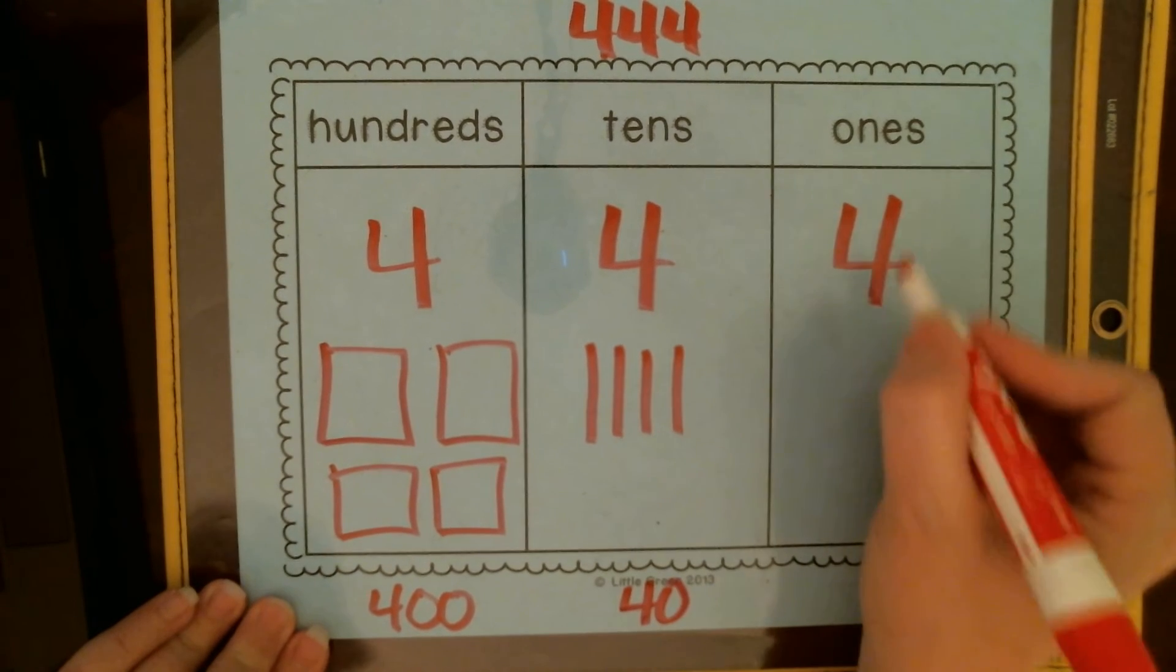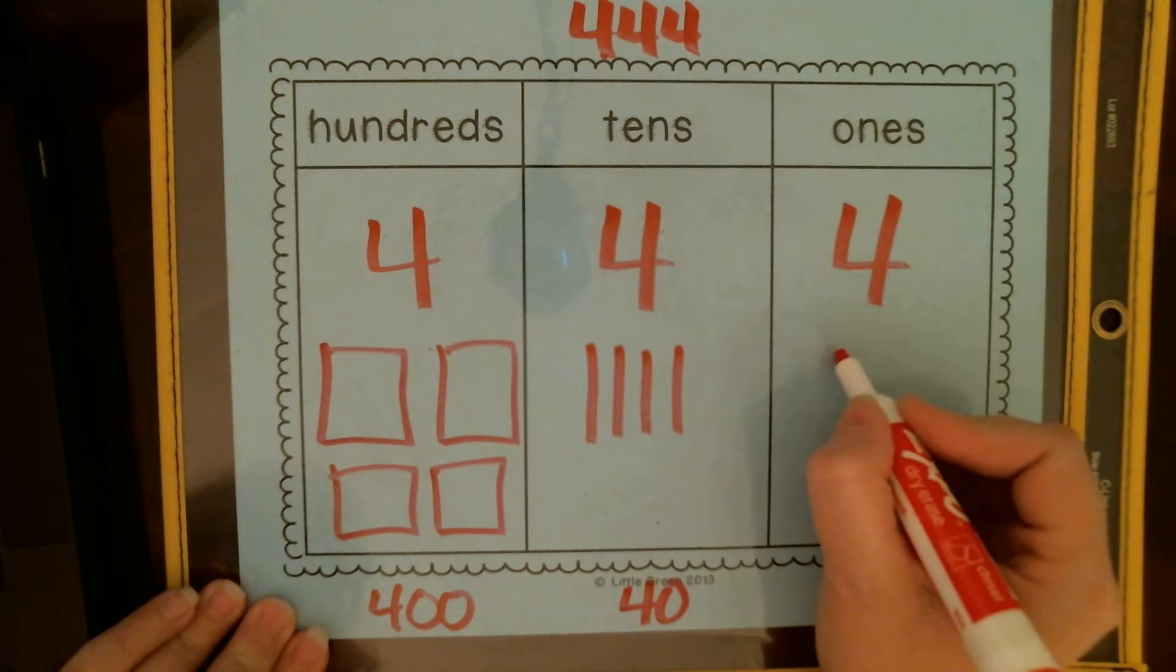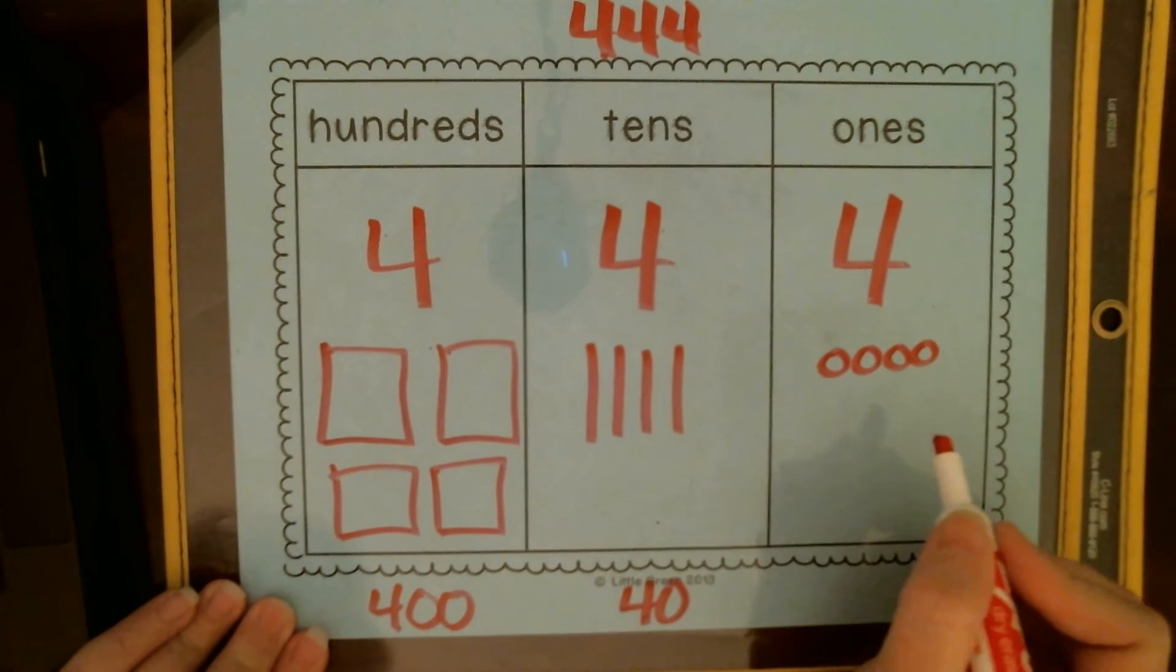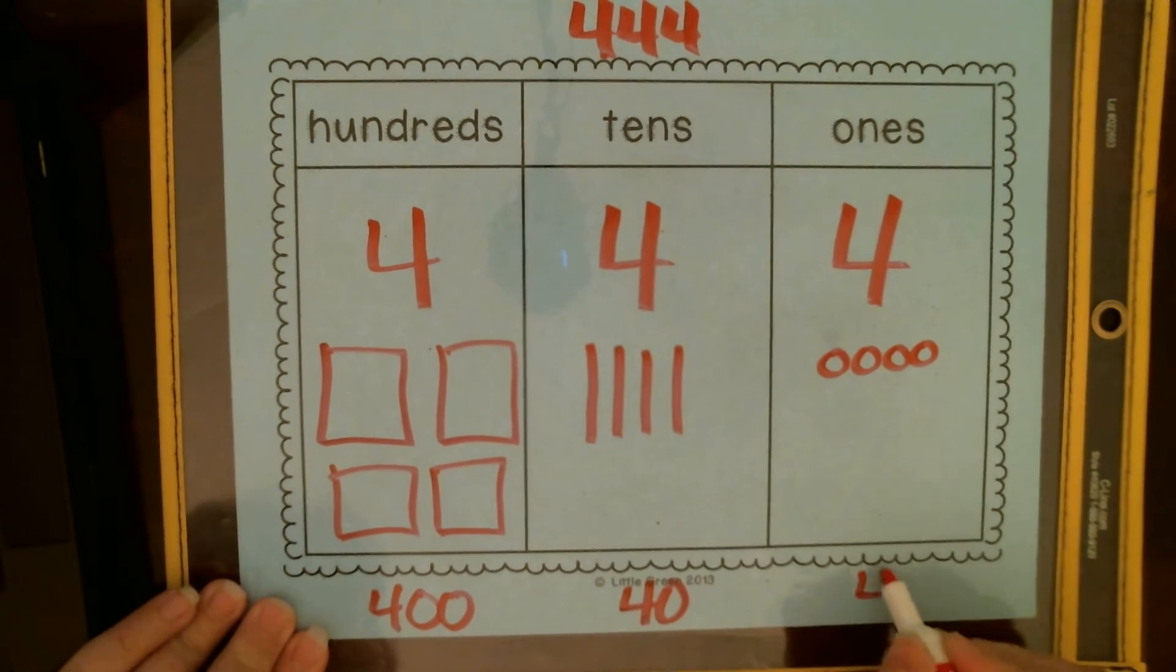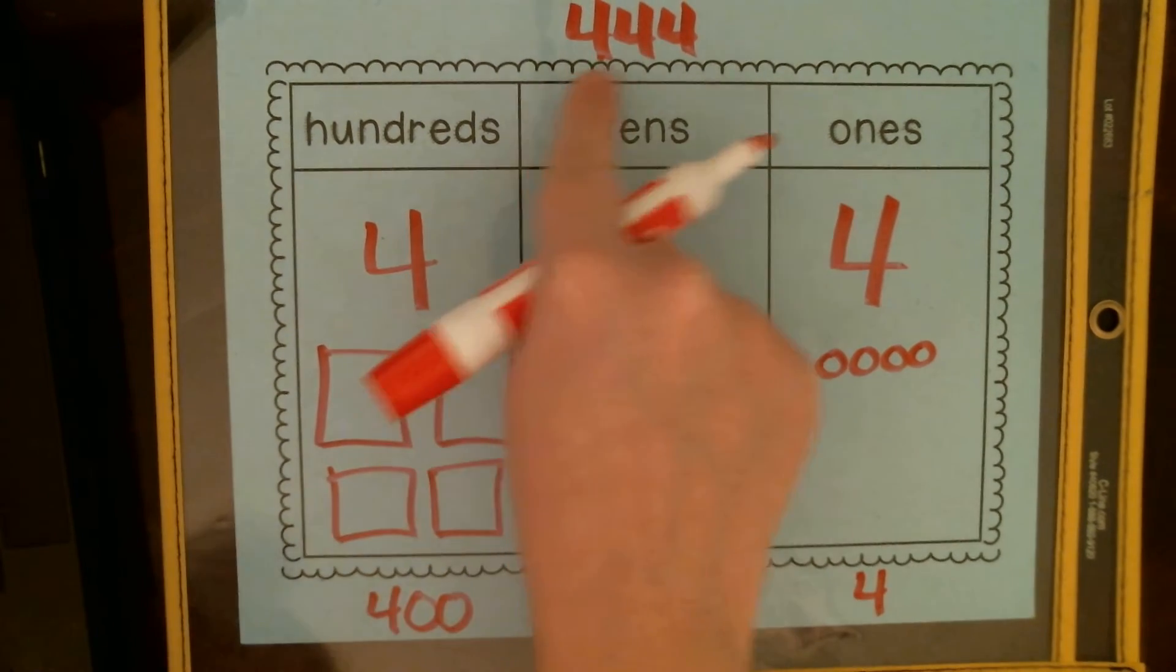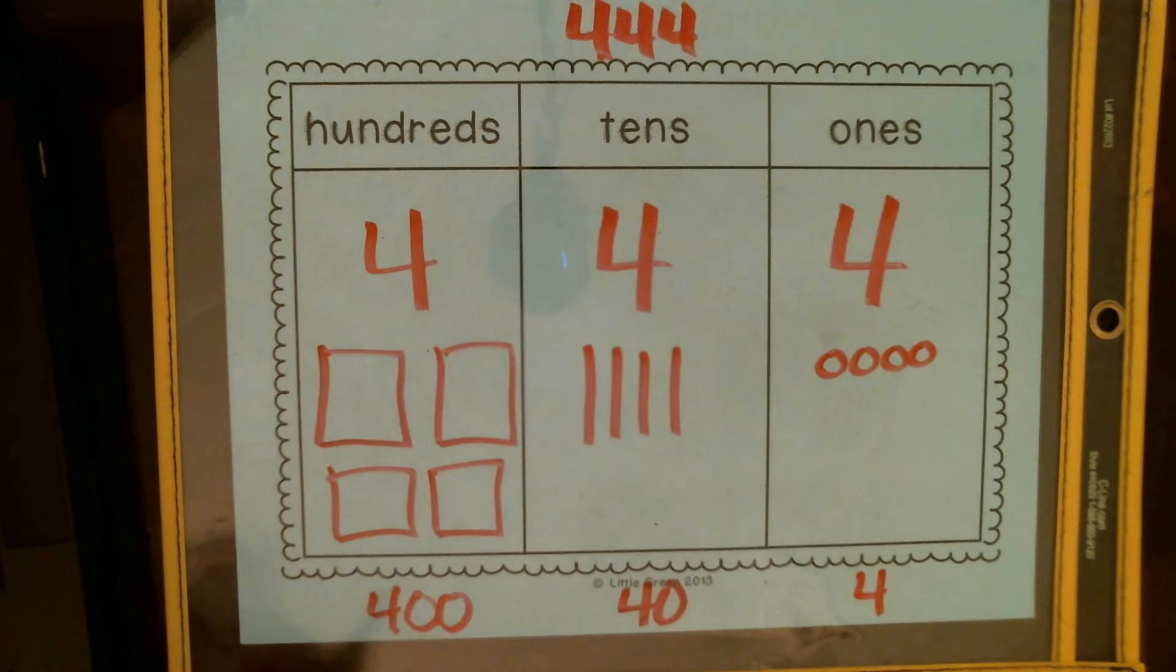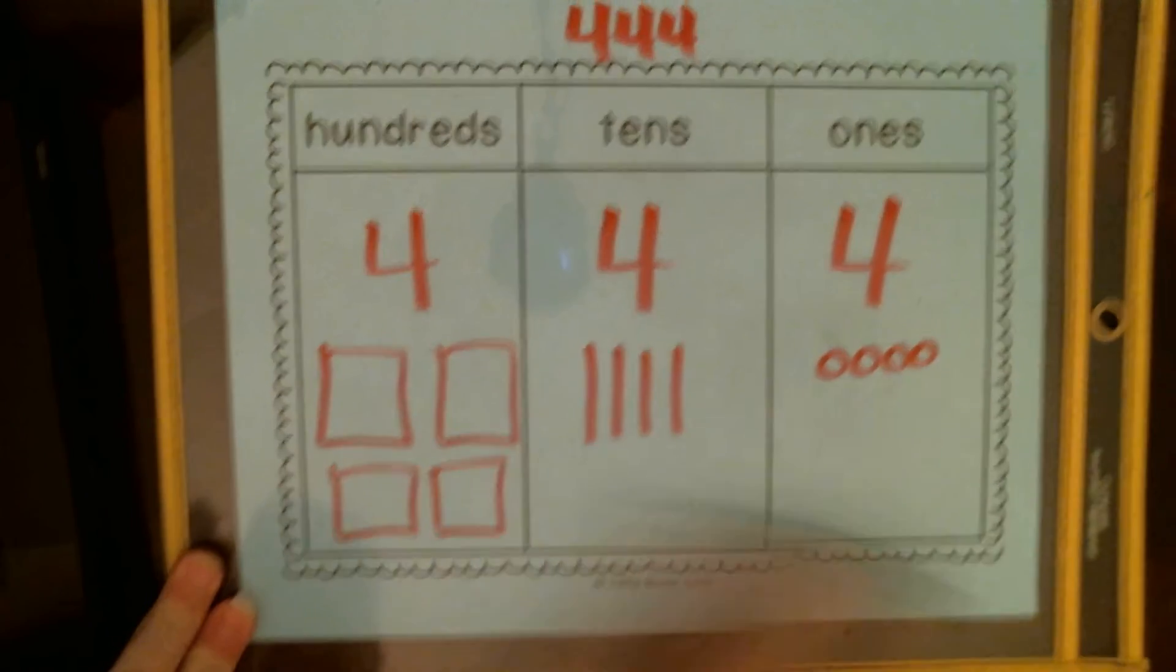And then the last four is in the ones place, and each of those is worth one, so the value of four ones is four. So each number has a different value depending on the place where it is. That's why it's really important that we pay attention to what place it's in and how we represent it.